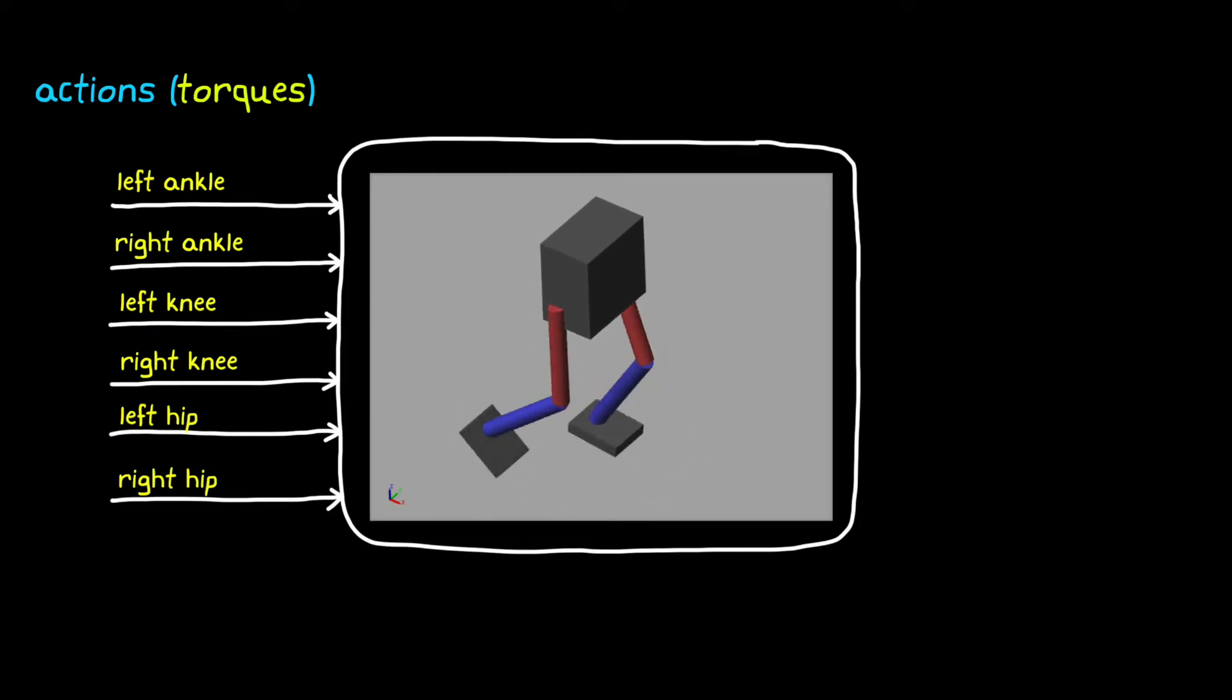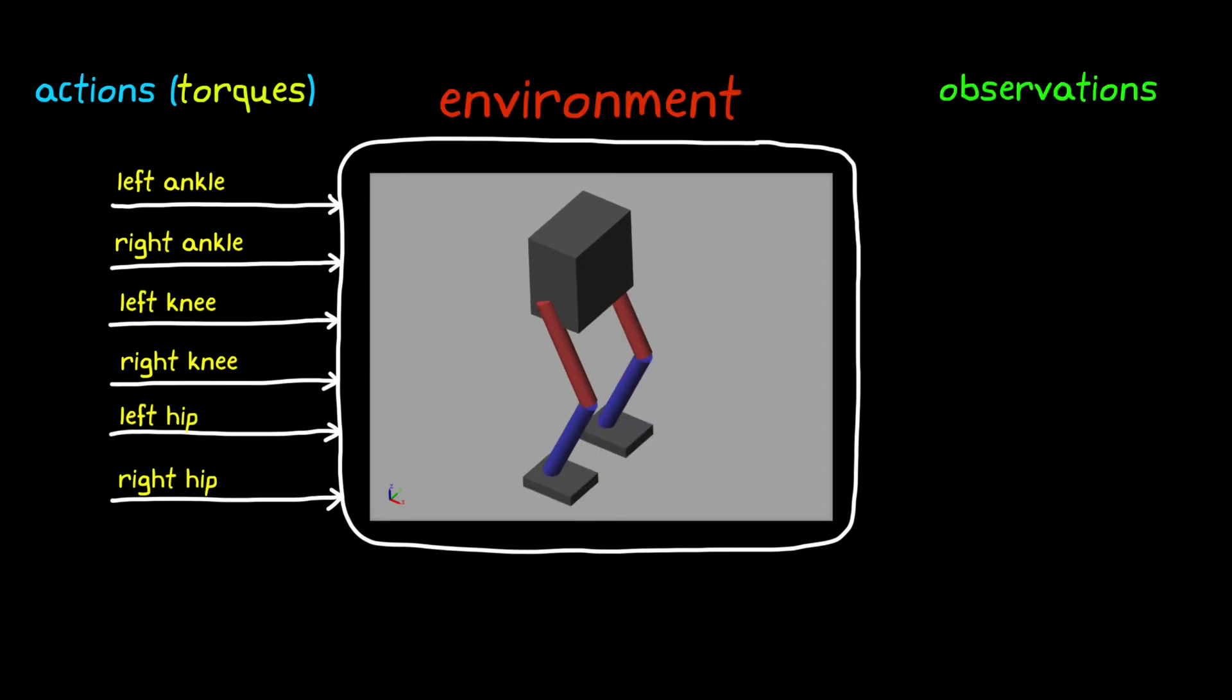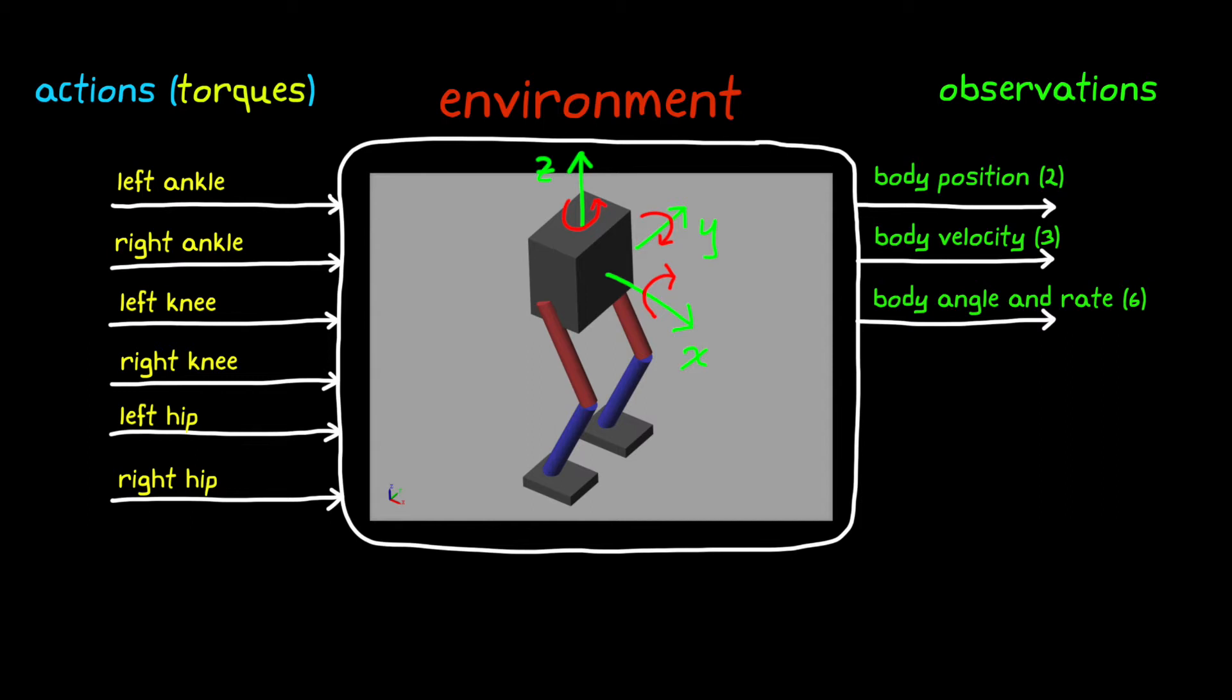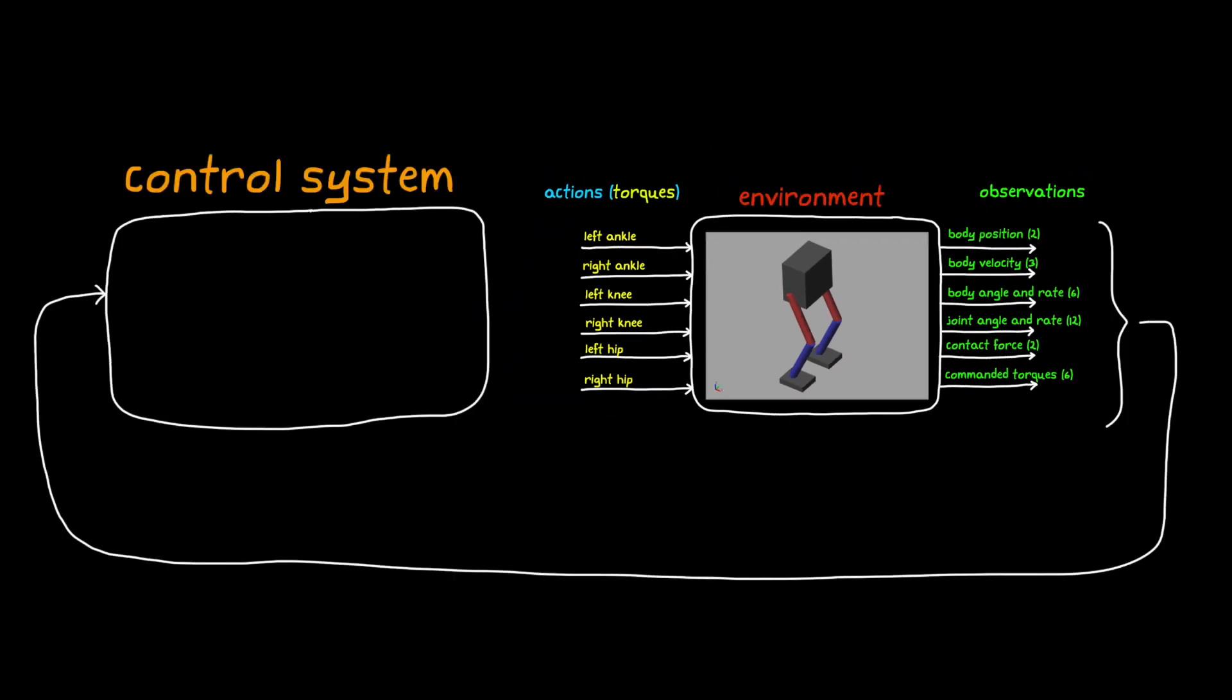Now the robot body and legs, along with the world in which it operates, makes up the environment. The observations from the environment are based on the type and locations of sensors as well as any other data that is generated by the software. For this example we're using 31 different observations. These are the y and z body positions, the x, y, and z body velocity, and the body orientation and angular rate. There are also the angles and angular rates of the six joints and the contact forces between the feet and the ground. Those are the sensed observations. We're also feeding back the six actions that we commanded in the previous time step which are stored in a buffer in software. So in all our control system would need to take in these 31 observations and then calculate the values of the six motor torques continuously. So you can start to see how complex the logic has to be for even this really simple system.